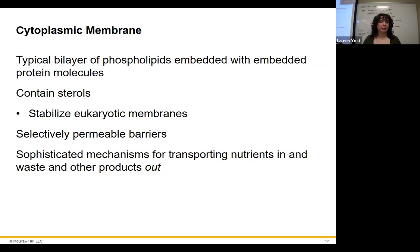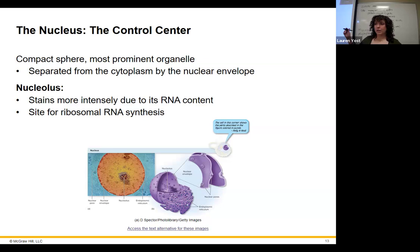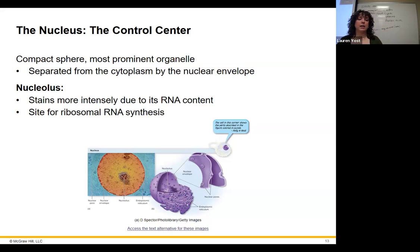Sterols stabilize the membranes, and the membranes are selectively permeable, just like bacteria — we can only let certain things in and out, so we have channels to allow specific things through. The nucleus is where we keep our genetic information — think of it like the Smithsonian. You're not going to take anything out of the Smithsonian. The original copies stay there. If you need to make a protein, your RNA will make a copy that you can take out.